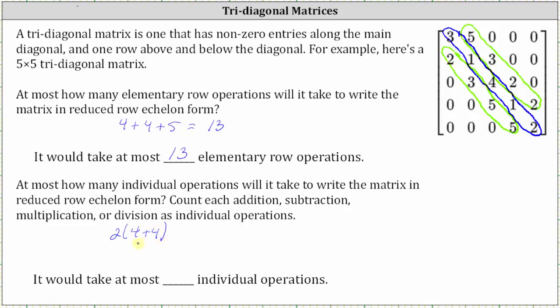That accounts for the zeros. Then it would only take one operation to get ones along the main diagonal by multiplying by a constant, so we add five. Simplifying, we have two times eight plus five, which is equal to 21. It would take at most 21 individual operations to write the matrix in reduced row echelon form.